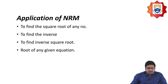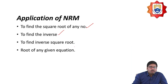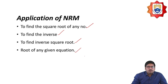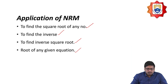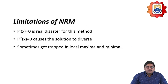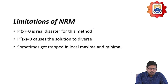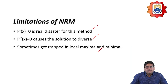The applications of the Newton-Raphson method include: finding the square root of any number, finding the inverse of a number, finding the inverse square root, and finding the root of any given equation. The limitations are that f'(x) being zero is a real problem for this method, f''(x) can cause the solution to diverge, and sometimes we get trapped in a local minimum.